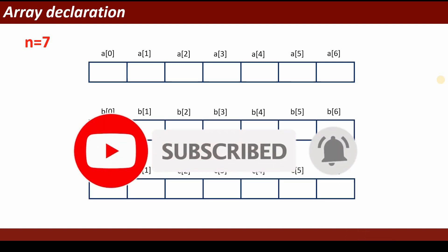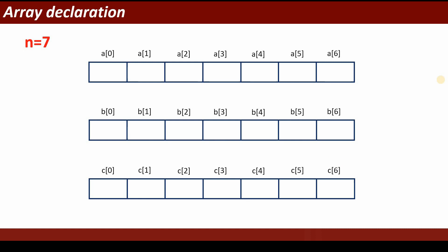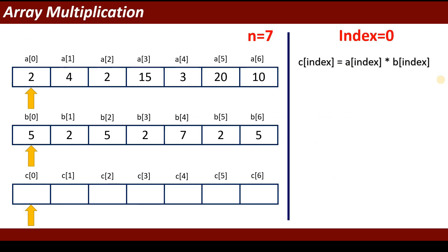Suppose you have entered the value of n as 7. These are the three arrays a, b, and c. Elements are represented by the array name followed by the index — the index always starts from 0. The first element is a[0], then a[1], and so on. Similarly for b[0], b[1], b[2], and c[0], c[1], c[2], and so on.